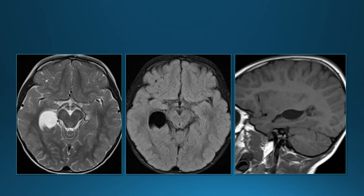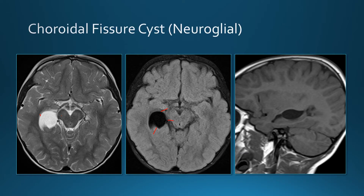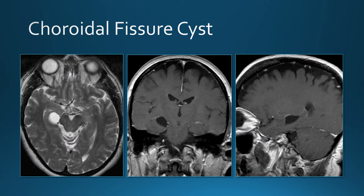This patient has a cystic lesion in a very characteristic location — iso-intense to CSF on all pulse sequences. It's right between the cerebral peduncle and the temporal horn. This is a choroidal fissure cyst, a neuroglial type of cyst. These are asymptomatic lesions — you leave them alone. The characteristic feature is the location: in the choroidal fissure between the cerebral peduncle and temporal horn. They don't enhance with contrast and are iso-intense to CSF.